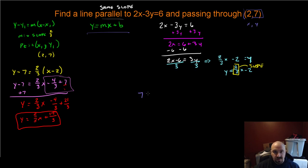That's going to give me 7 = (2/3)(2) + b. I don't know what b is, so I'm going to try to find it. I have 7 = 4/3 + b. I'm going to subtract 4/3 from both sides. I can use a common denominator, so this is going to be 21/3 - 4/3 = b, which means that b = 17/3.